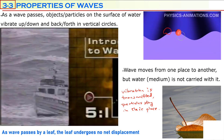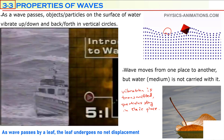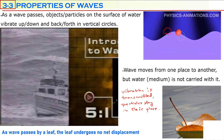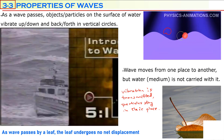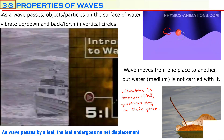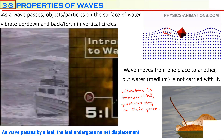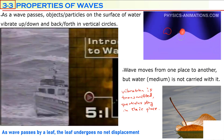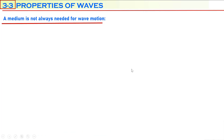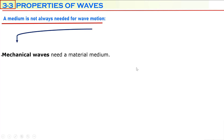In wave motion, particles don't displace — they only vibrate up and down, back and forth, but their net displacement becomes zero. Also, a medium is not always needed for wave motion. What is a medium? Let's understand this.